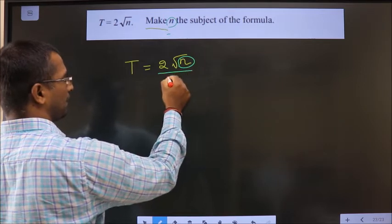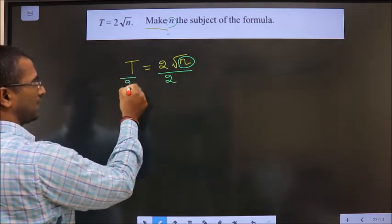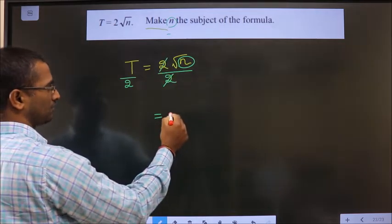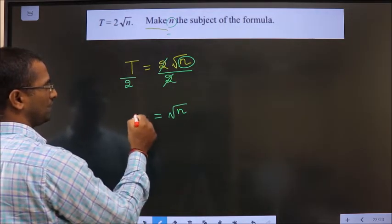So step 1: Divide by 2 on both sides. Why am I dividing by 2? Such that this cancels out, leaving us with root n.